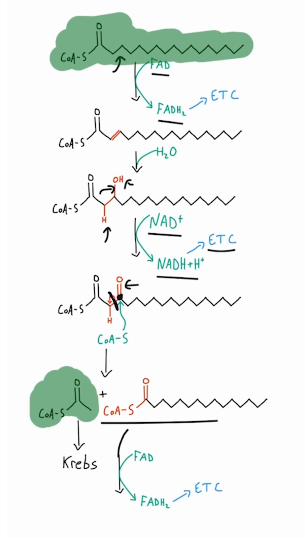That shortened molecule goes through the exact same process as the original, and every time it does, it produces one FADH2, one NADH, and one acetyl coenzyme A, which goes to the Krebs cycle. Since acetyl coenzyme A is two carbons, our original molecule loses two carbons each cycle. You can use simple math to figure out how many acetyl coenzyme A molecules can be produced — for a 16-carbon fatty acid, divide by two to get eight molecules of acetyl-CoA.